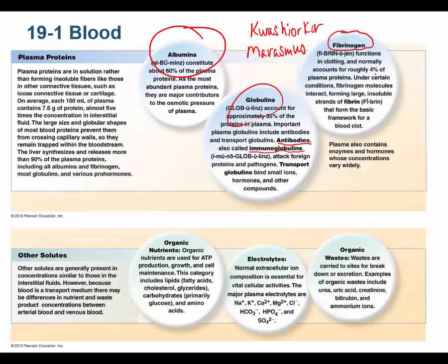Fibrinogen makes up about 4% of plasma proteins. Other solutes in plasma include LDL, HDL, cholesterol, electrolytes, and waste products that the kidneys will eventually filter out.